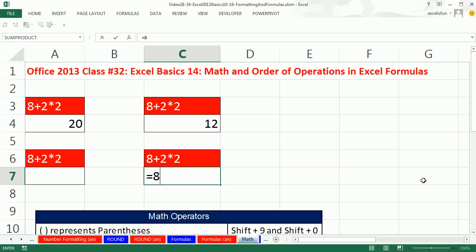Equals 8 plus 2 times 2. So it must be 12. And it is, because multiplication comes before addition.